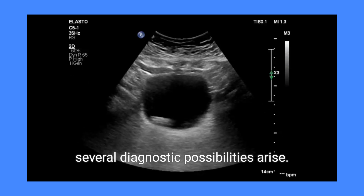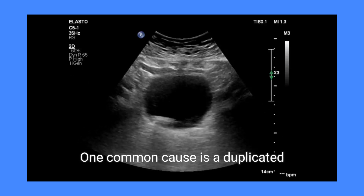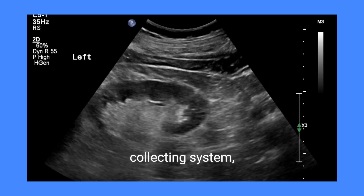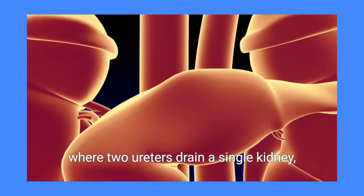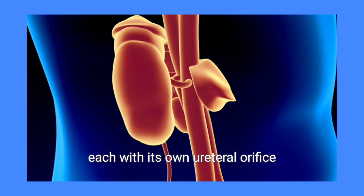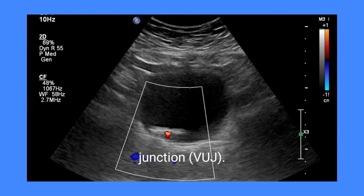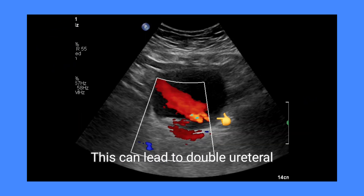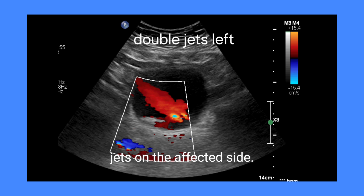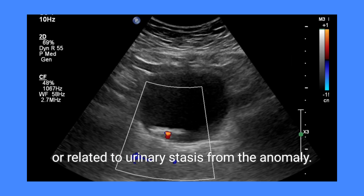One common cause is a duplicated collecting system, where two ureters drain a single kidney, each with its own ureteral orifice at the vesicoureteric junction (VUJ). This can lead to double ureteral jets on the affected side. The bladder calculus might be incidental or related to urinary stasis from the anomaly.